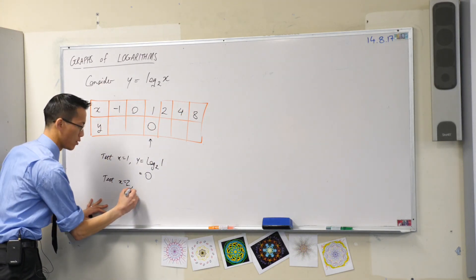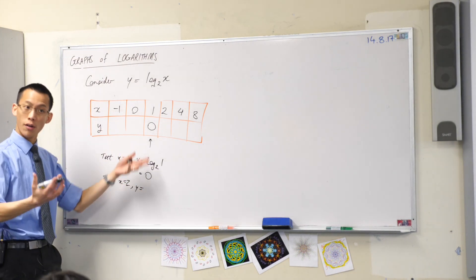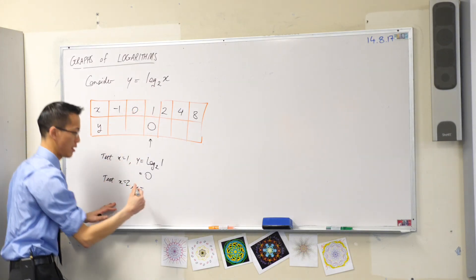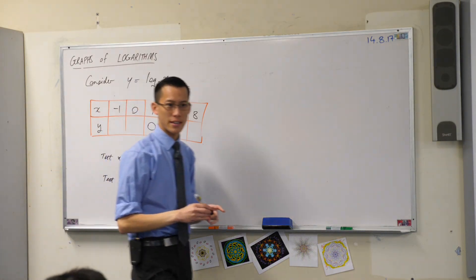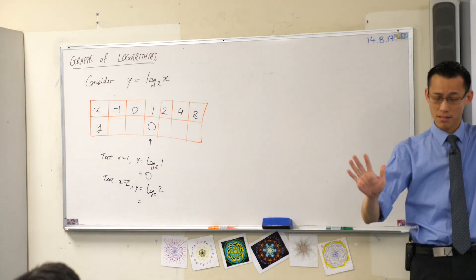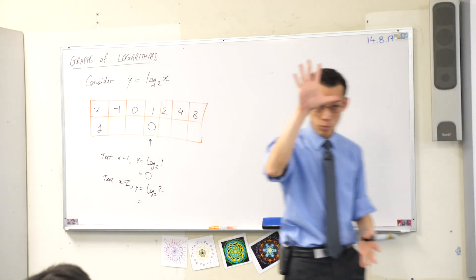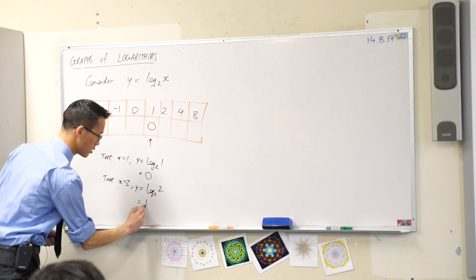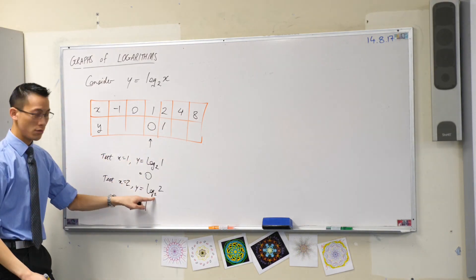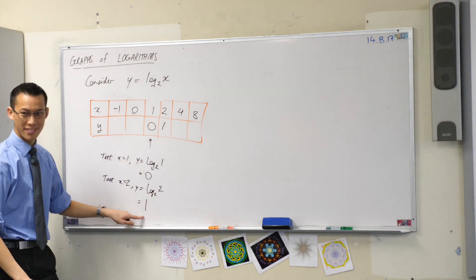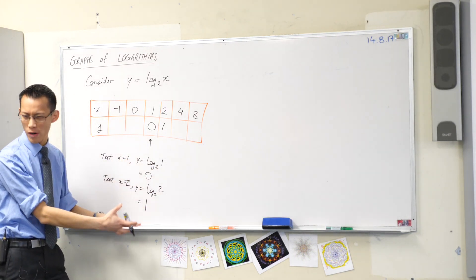When x is equal to 2, y will be log base 2 of 2, because the x value is changing. Log base 2 of 2 means: 2 to the power of something gives me 2. Well, 2 to the power of 1 gives you 2. This is the weird backwards way that logs are read.